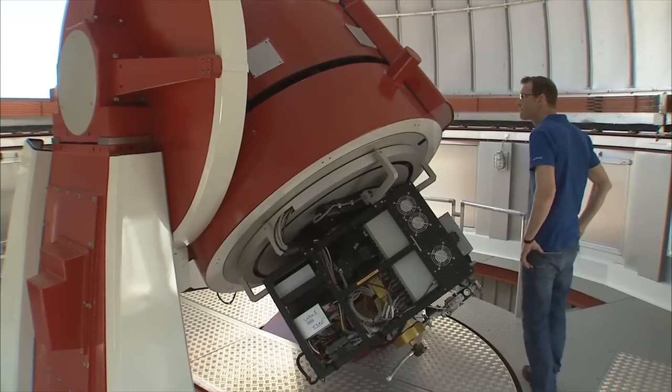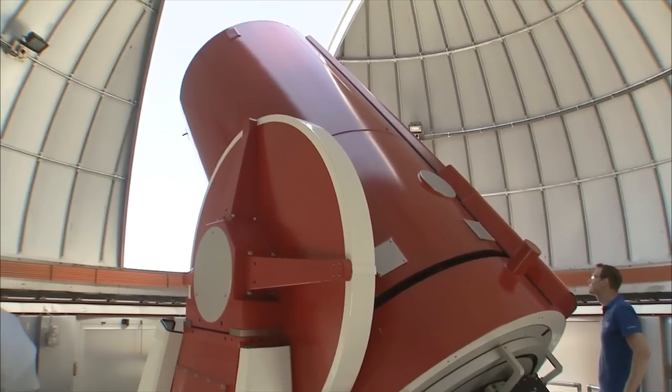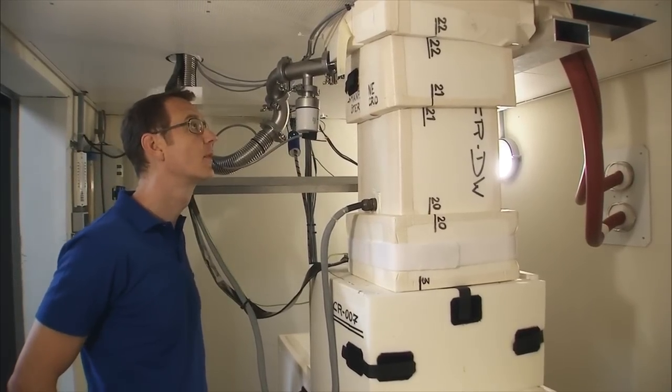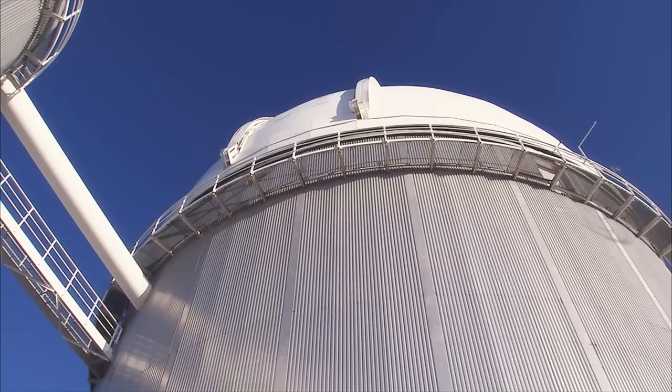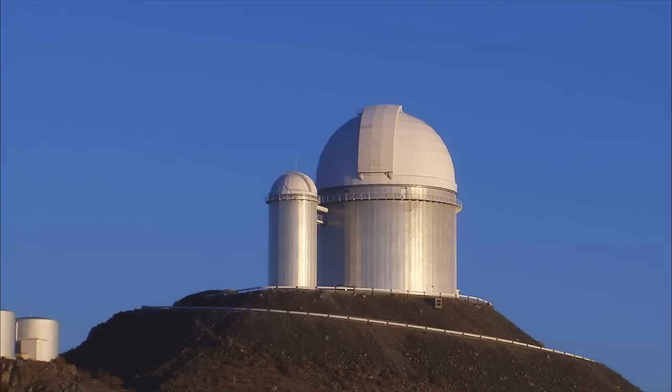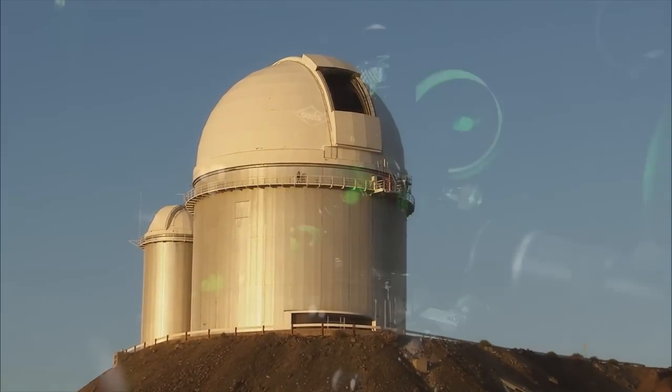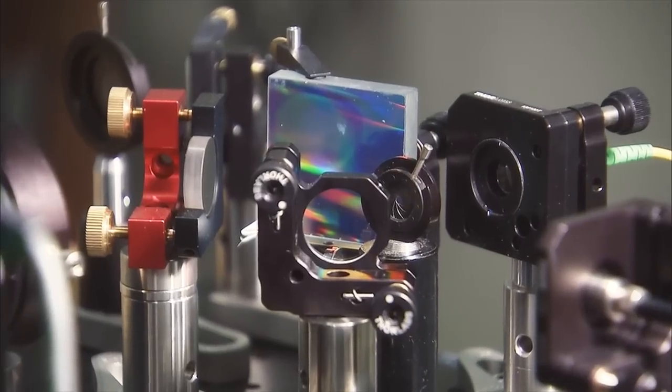Here's the Coralie spectrograph, mounted on the Swiss-Leonard Euler telescope. It measures the tiny wobbles of stars caused by the gravity of orbiting planets. ESO's venerable 3.6-metre telescope is also hunting for exoplanets. The HARPS spectrograph is the most accurate in the world. So far, it's discovered more than 150 planets.